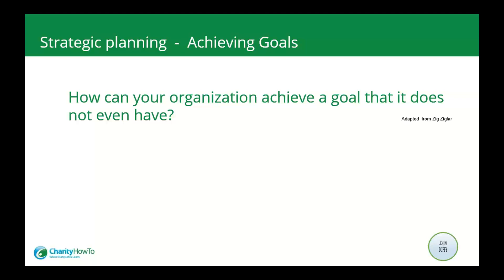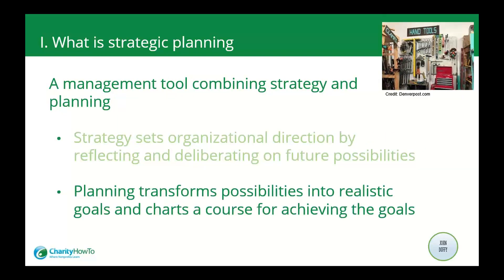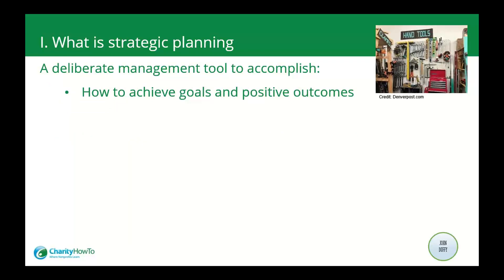That's what strategic planning is all about. Fundamentally, strategic planning is a management tool that combines strategy and planning. Strategy sets the direction of the organization through a process of reflection on future possibilities — in other words, what the organization seeks to achieve and how. Planning is about transforming these possibilities into realistic goals and sets a deliberate course of action for achieving them. The strategic planning process identifies what must be done, when it must be done, how it should be done, and aligns all of the nonprofit's human and non-human resources to achieve what it seeks to achieve.